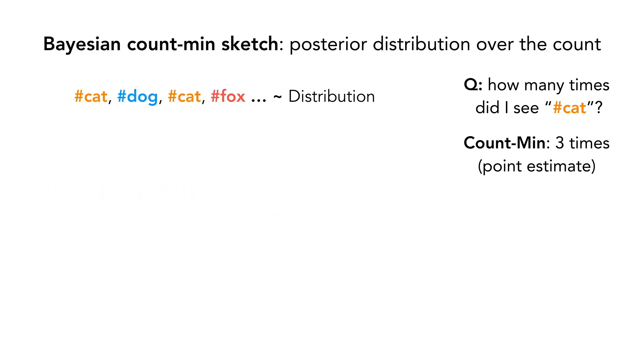But often times, we have a priori information on the distribution of the tokens. Our goal is to use this information to compute Bayesian estimates for the count, given by a posterior distribution over the possible values of the count.